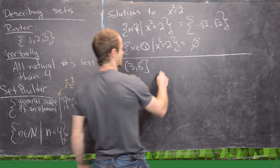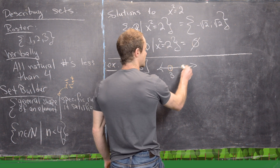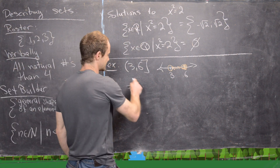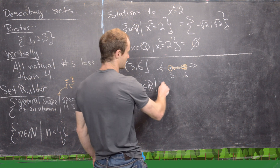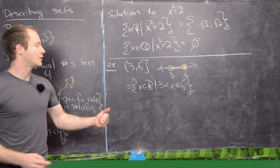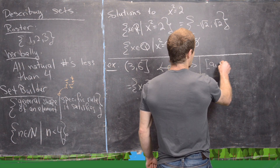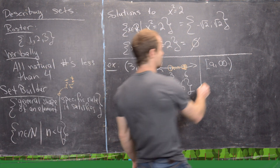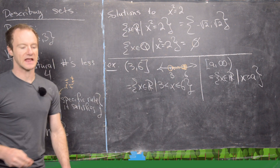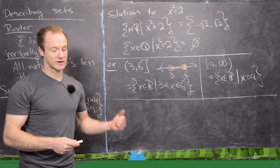We can also express intervals using set builder notation. For example, the interval (3, 6] — open on the left, closed on the right — is {x ∈ ℝ | 3 < x ≤ 6}. Similarly, the interval [a, +∞) is {x ∈ ℝ | x ≥ a}, since we include a in that case.